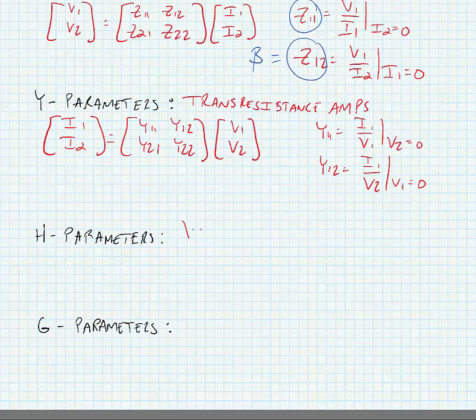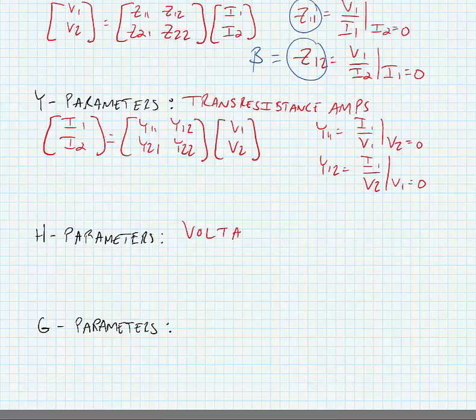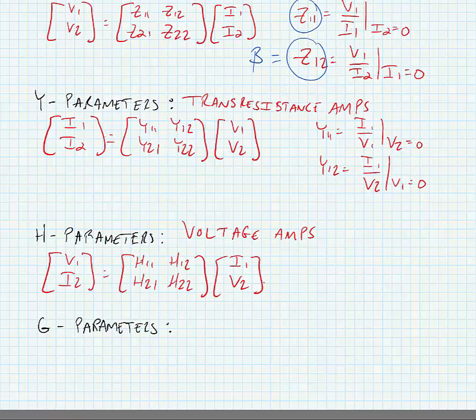H parameters are used for voltage amplifiers. These are hybrid because they involve a voltage and a current on either side of this matrix expression.